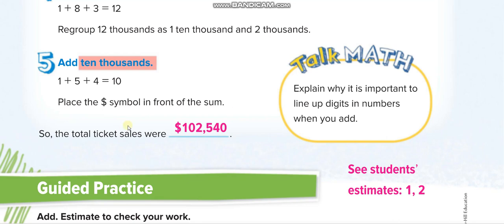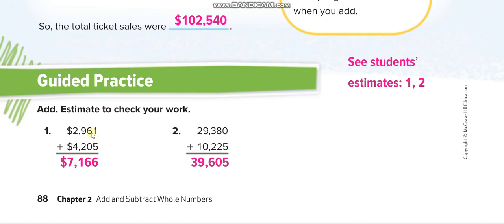In guided practice: 1 plus 5 is 6. 6 plus 0 is 6. 9 plus 2 is 11. 1 here, one up. They didn't write it, so let us write it. 1 up here as carry. 1 and 2 is 3, 3 and 4 is 7.